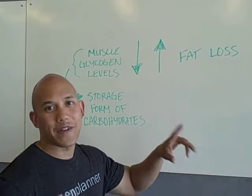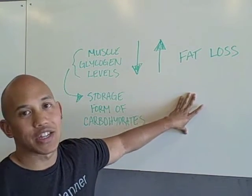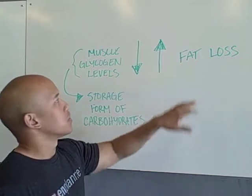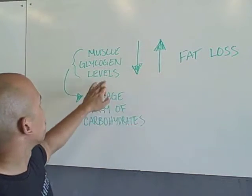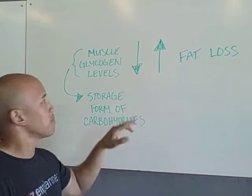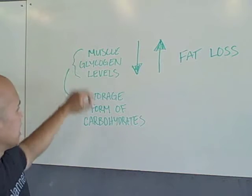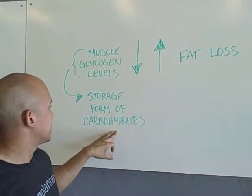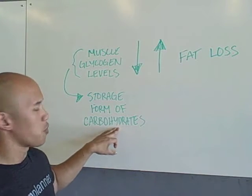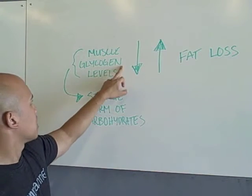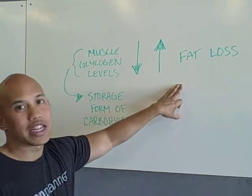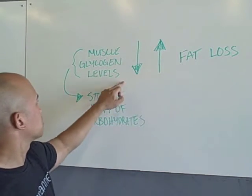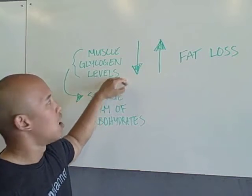Let's talk about fat loss. One of the things you need to know about fat loss is that there's an inverse relationship between fat loss and your muscle glycogen stores. Muscle glycogen is basically the storage form of carbohydrates in your muscles. Fat loss is increased whenever muscle glycogen stores are lowered.